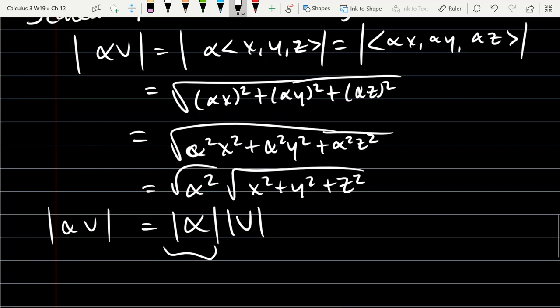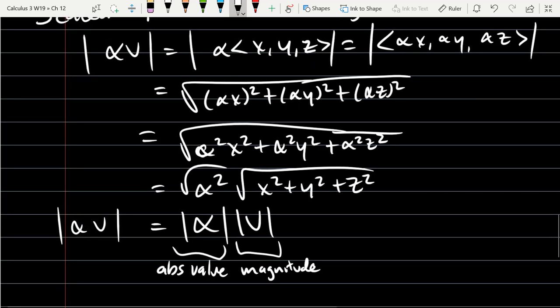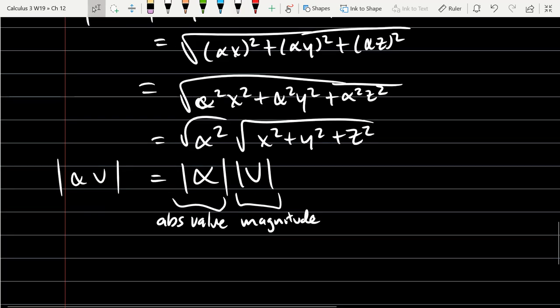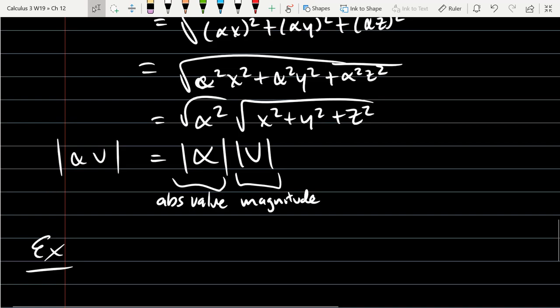We have a notational confusion right here. You have to know what's inside the vertical bars. Our first vertical bars around alpha, that's absolute value. Our vertical bars around v is magnitude. So it's a little bit tricky because they both look exactly the same.